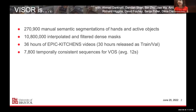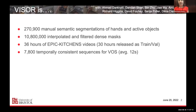For those who work in video object segmentation — datasets like Davis, YouTube VOS, etc. — we will be releasing shorter sequences, 12 seconds on average: 7,800 temporally consistent sequences, particularly for video object segmentation.